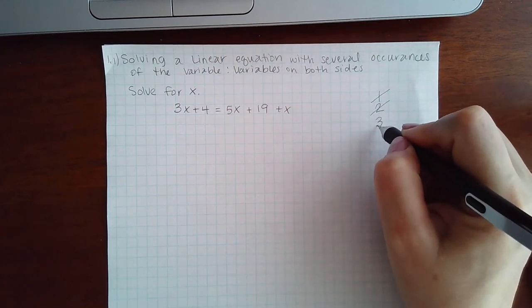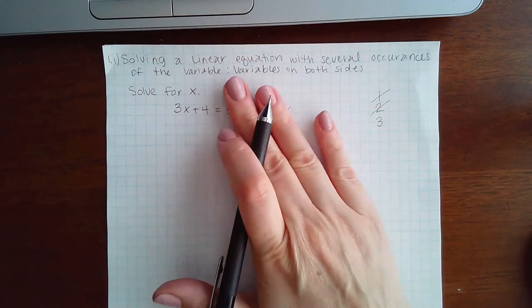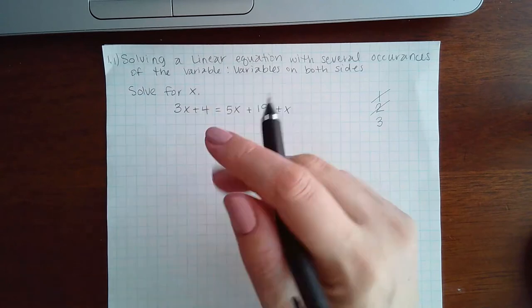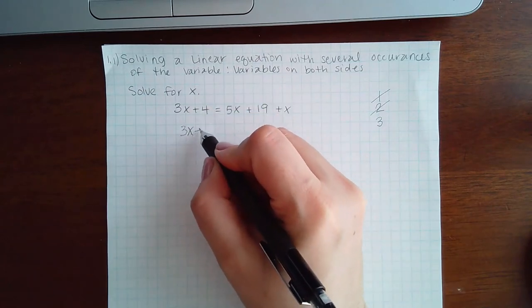Third step is to combine like terms on each side separately. So on the left hand side, 3x plus 4, those are not like terms. So there's nothing to combine on the left side.